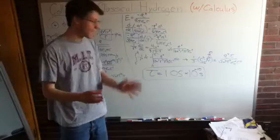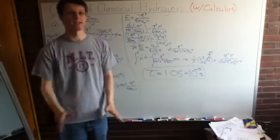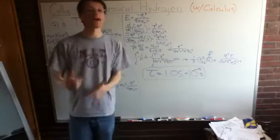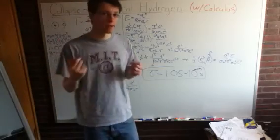That's how long it takes a classical atom to collapse. It takes a billionth of a billionth of a second, really, really fast. Basically, none of us would exist if classical mechanics was correct, which is why we need quantum mechanics.